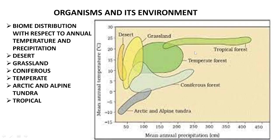So this is about the different biome distributions with respect to annual temperature and precipitation. In the next lecture we will be talking about the adaptations that organisms adopt with respect to different environments — whether desert, aquatic, moderate, saline, or haline conditions. Thank you.